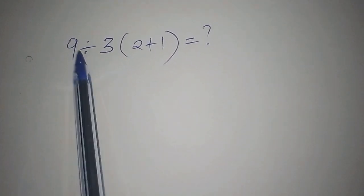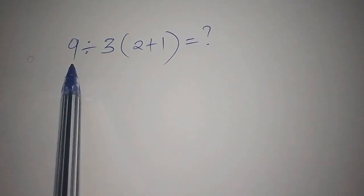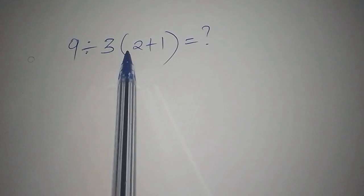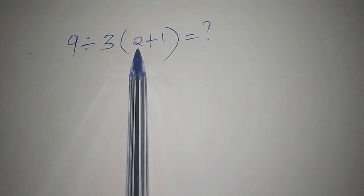Hello everyone, I want us to solve this math problem. We have 9 divided by 3 into bracket 2 plus 1.